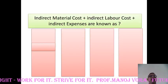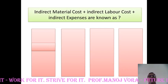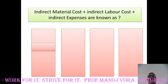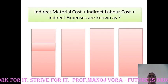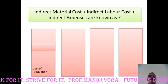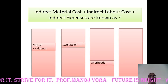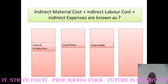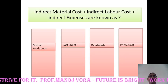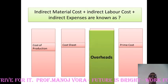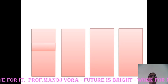Your next question: indirect material cost plus indirect labour cost plus all indirect expenses can be termed as cost of production, cost sheet, overheads, or prime cost. Your answer has to be overheads.